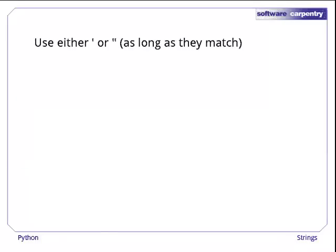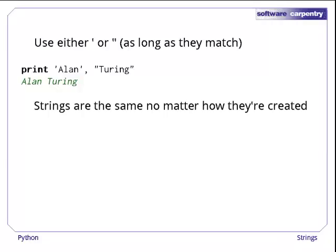Strings can be wrapped in either single quotes or double quotes, as long as the quotes match. Here, the first string is in single quotes, and the second in double quotes. It doesn't matter which form is used, the string's value is the same. We can use equals equals to test this.